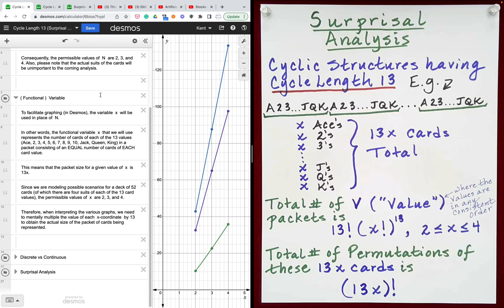This means that the packet size for a given value of x is 13x. Since we are modeling possible scenarios for a deck of 52 cards, the permissible values of x are 2, 3, and 4. Therefore, when interpreting the various graphs, we need to mentally multiply the value of each x coordinate by 13 to obtain the actual size of the packet of cards being represented.